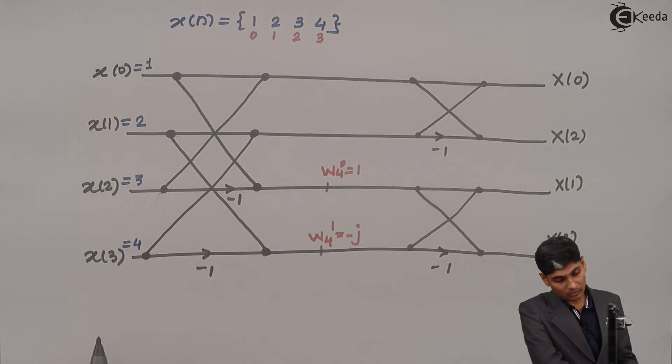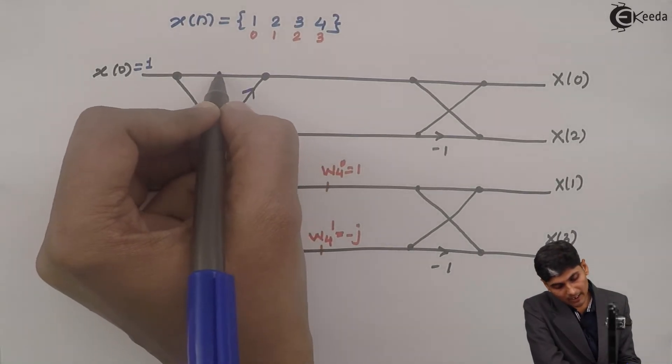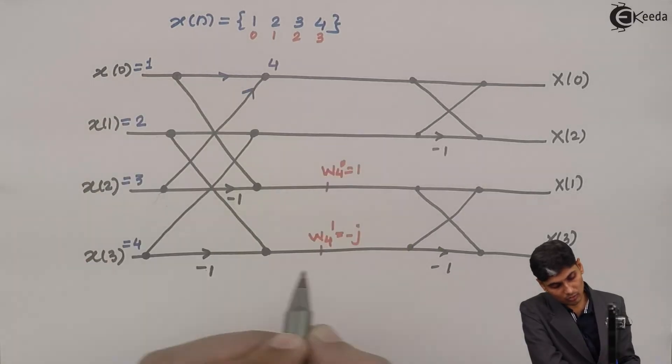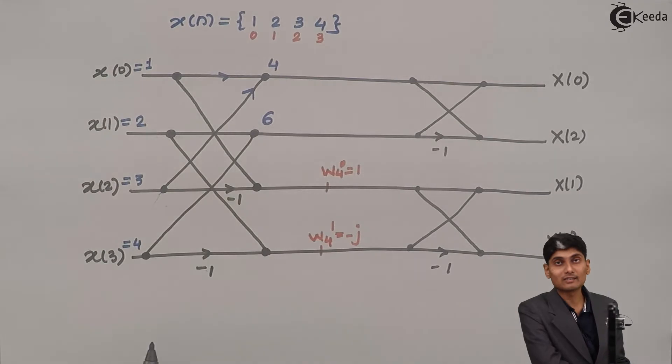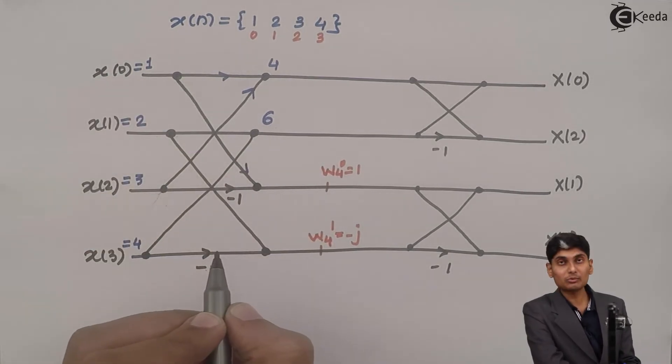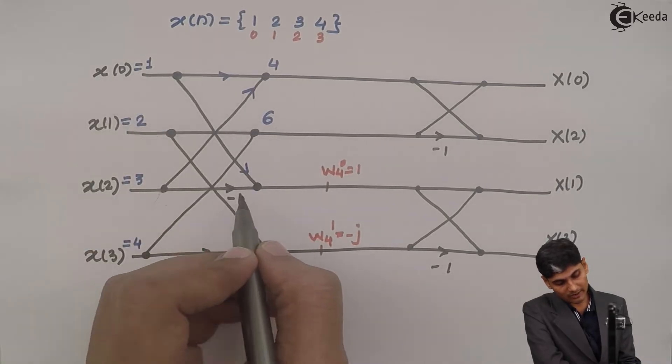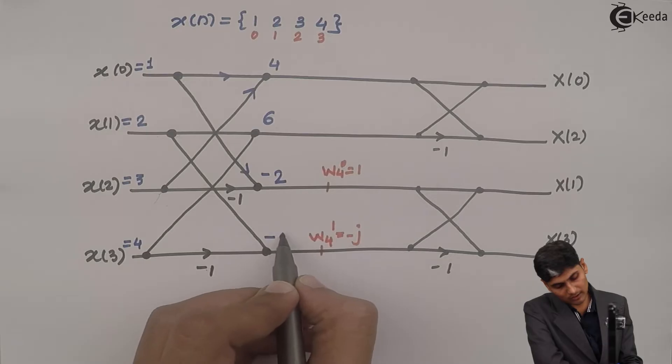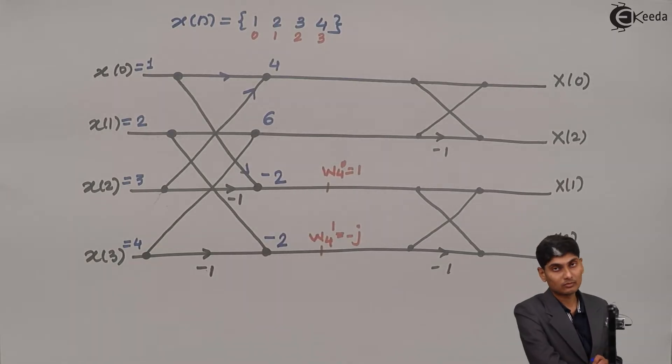Now whenever I go up, I need to add. So 3 plus 1 is 4, 4 plus 2 is 6. When I come from up to down, I need to subtract. So 1 minus 3 is minus 2, 2 minus 4 is again minus 2.